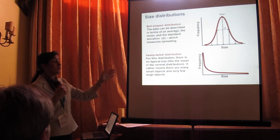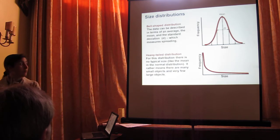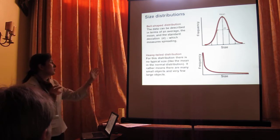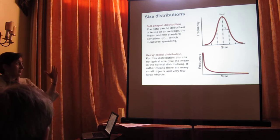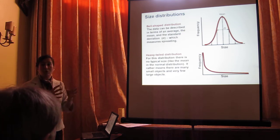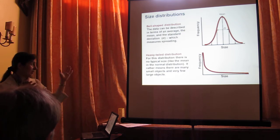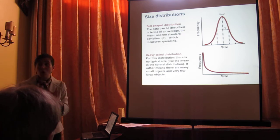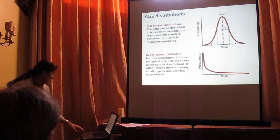In a heavy-tail distribution, commonly known as a power law size distribution, there is no typical size as we have with the mean value for the normal distribution. Power law simply means that there are many small objects and very few large objects.